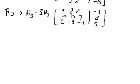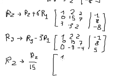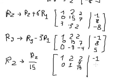For row number two, we need to divide by fifteen. So we have: one, two, two, negative one; zero, one, seven over fifteen, and eight divided by fifteen.